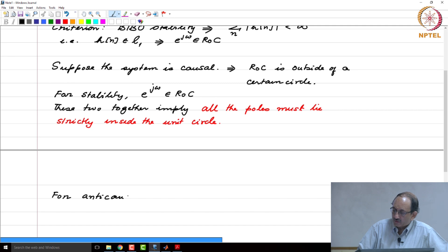For anti-causal systems, what can you say about the ROC? ROC is inside a certain circle, right?